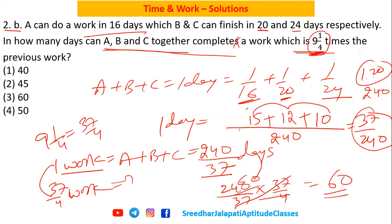Therefore, to complete 9¼ times the work, they take 60 days. In this question the last part is something new; otherwise it's a very regular basic question.